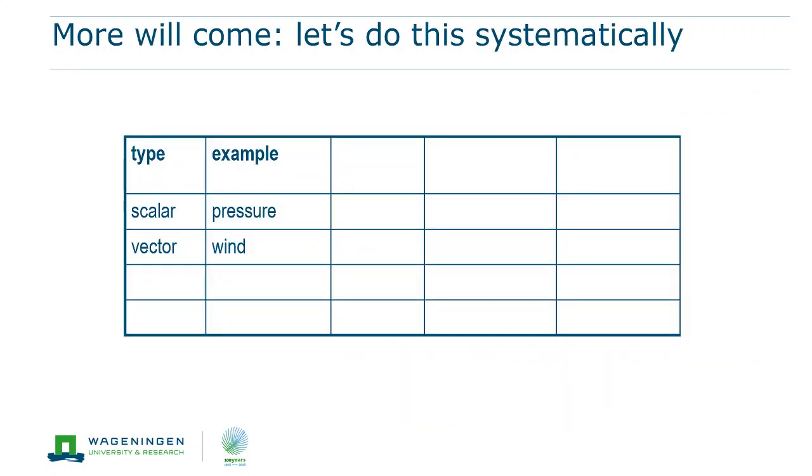Since this story is going to be a bit more complex, we're going to do this very systematically. We start with two columns. The first one shows the type of the variable, the second one gives an example. But you already see that there are two more lines that are not yet filled. So we want to do something a bit more general.